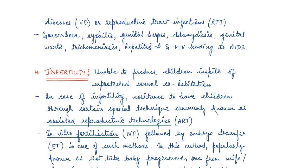To protect oneself, one should avoid sex with unknown or multiple partners, always use condoms during coitus, and consult a qualified doctor if infection is suspected to get complete treatment. Apart from STIs, infertility is another common problem — when a person is unable to produce children in spite of having unprotected sex or unprotected sexual cohabitation.